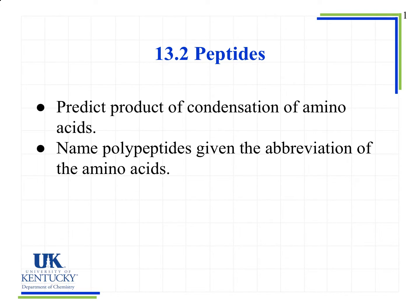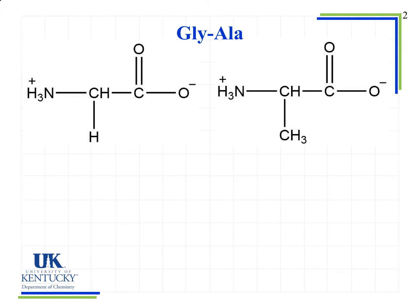In this lesson we're going to look in more detail at the condensation of amino acids to form peptides, and also how we name those polypeptides from the abbreviations of the amino acids. Here we're looking at two of our simplest amino acids: glycine, abbreviated GLY, which has H as its side group, and alanine, which has CH3 as its side group.